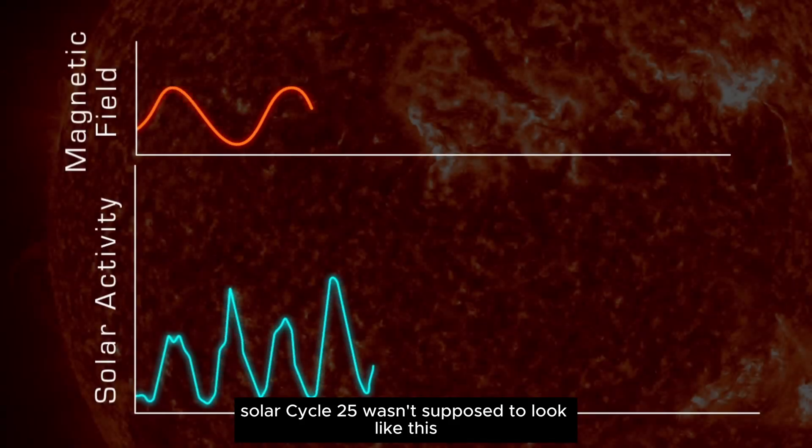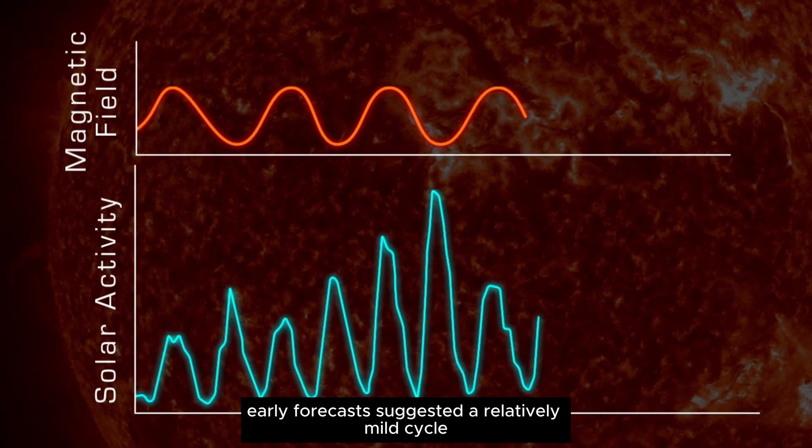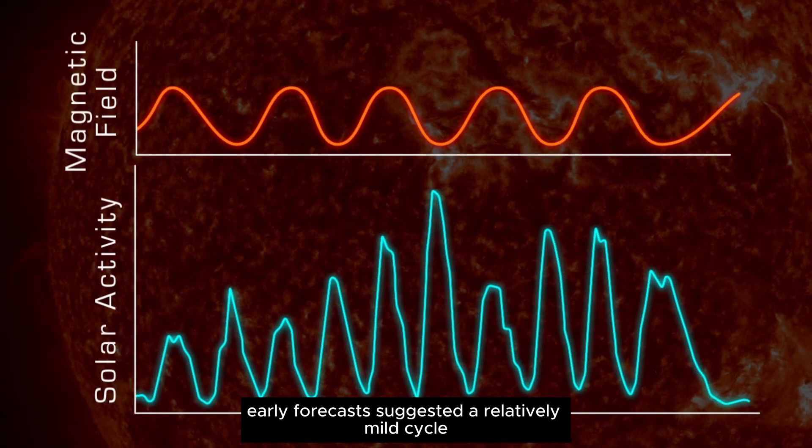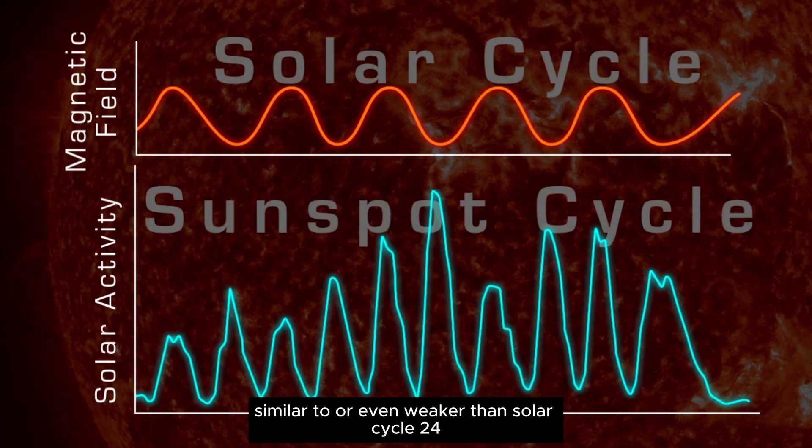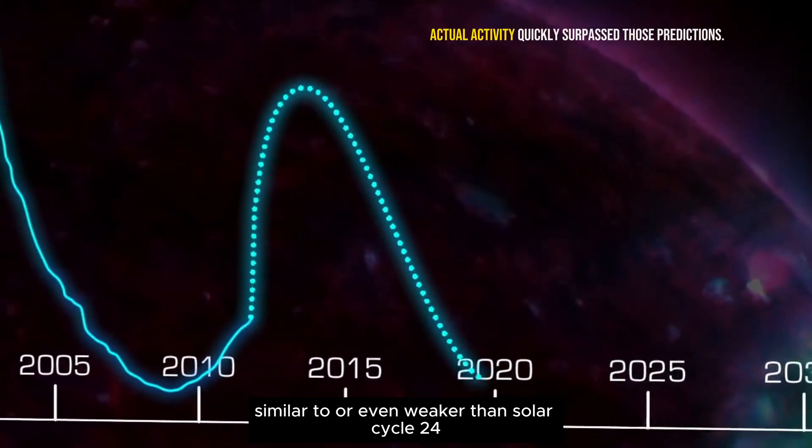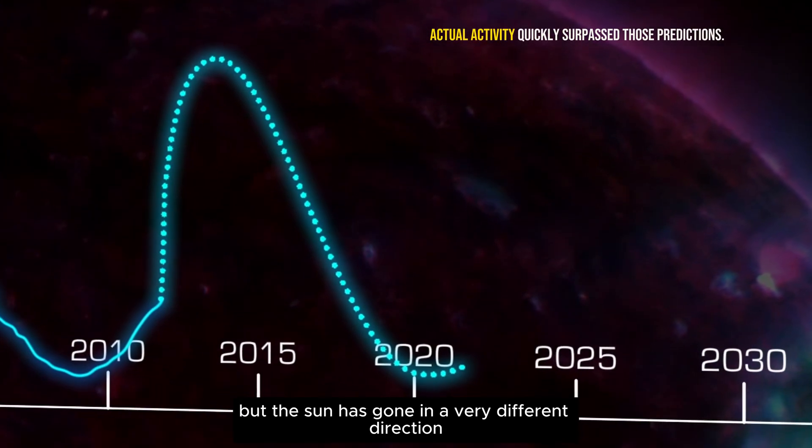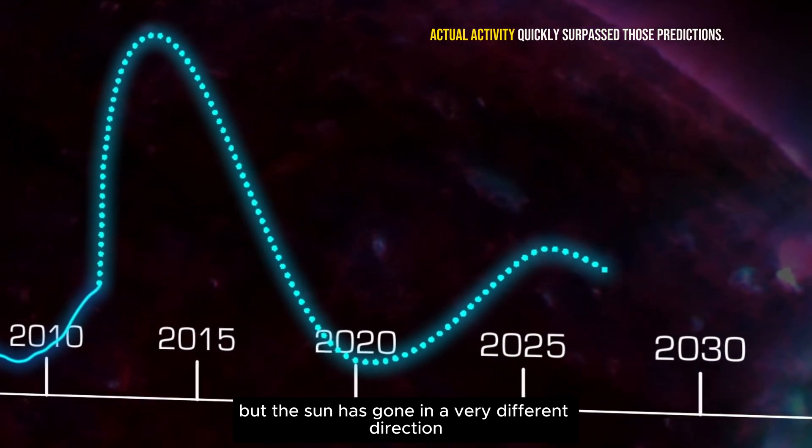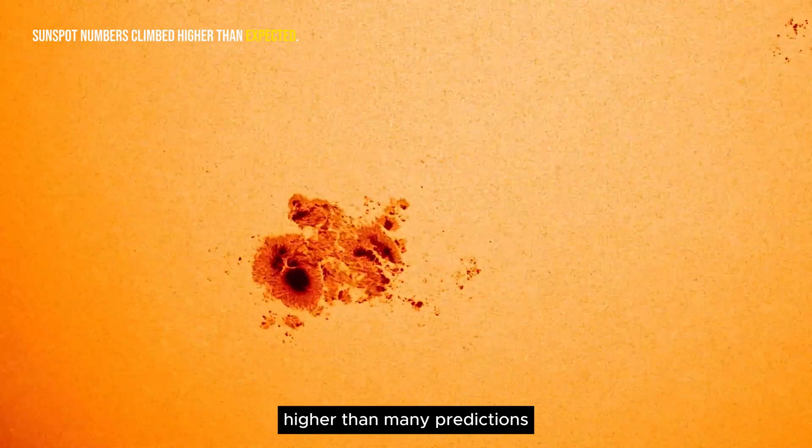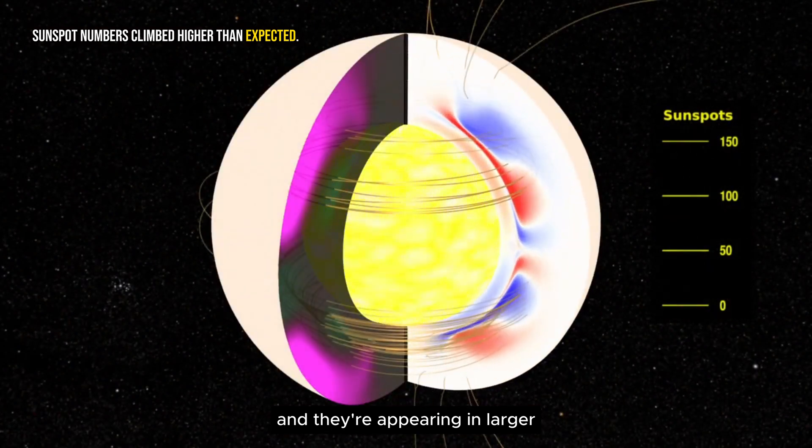Solar cycle 25 wasn't supposed to look like this. Early forecasts suggested a relatively mild cycle, similar to, or even weaker than, solar cycle 24. But the sun has gone in a very different direction. Sunspot numbers have climbed higher than many predictions, and they're appearing in larger,